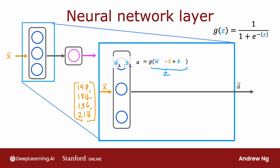dot product x plus b1, where this is the familiar z value from logistic regression, and g of z is the familiar logistic function 1 over 1 plus e to the negative z. So maybe this ends up being a number like 0.3 — that's the activation value of the first neuron, which I'll denote as a1. So a1 may be 0.3, representing a 0.3 chance of this being highly affordable based on the input features.